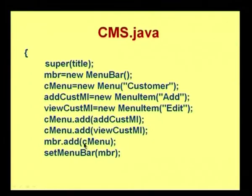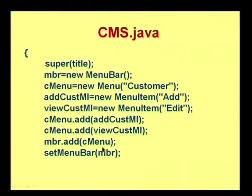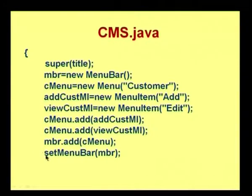Here we are creating an instance of the menu bar, then creating one menu called 'Customer' and two menu items — add and edit — and adding these two menu items to the menu. The menu is added onto the menu bar, and then I call the setMenuBar method of the frame, giving my menu bar as the parameter. Now this menu bar is associated with the current frame.